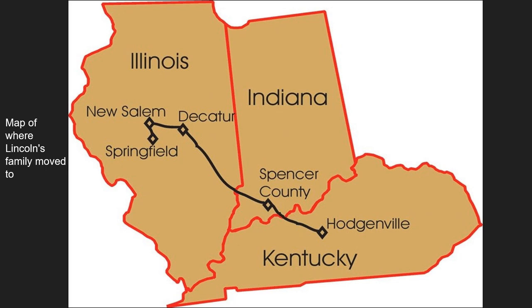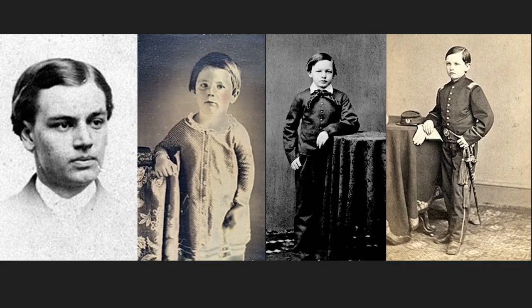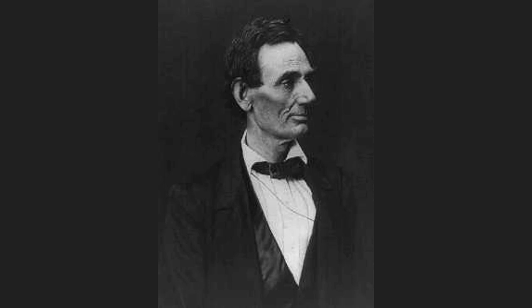He moved to Springfield and worked as a lawyer. This is how he met Mary Todd, and they started to date. They got married in 1842 and had four children in total: Robert, Edward, William, and Thomas. Lincoln was elected into the House of Representatives in 1846. He was unpopular with Illinois voters because of his views on the Mexican-American War.